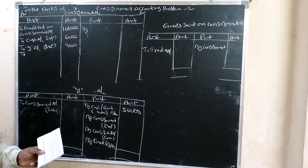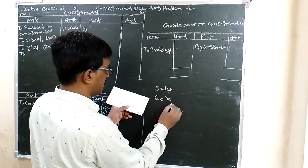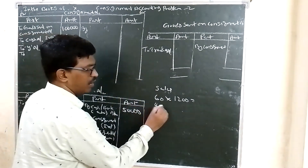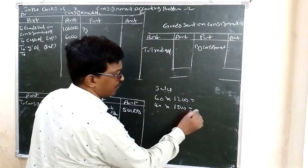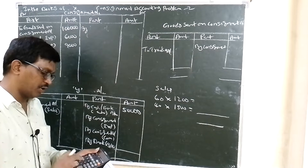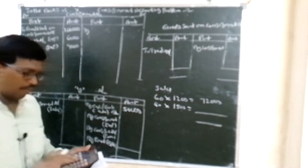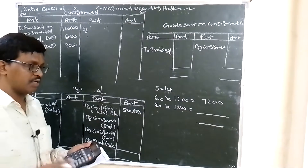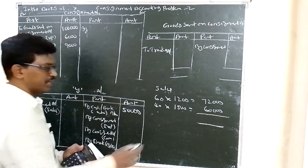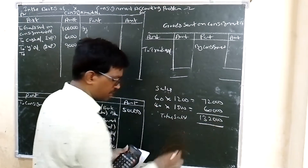Y sold 60 boxes at 1,200 rupees each: 60 × 1,200 = 72,000 rupees. Remaining boxes: 100 minus 60 = 40 boxes sold at 1,500 rupees each: 40 × 1,500 = 60,000 rupees. Total sales: 72,000 + 60,000 = 1,32,000 rupees.